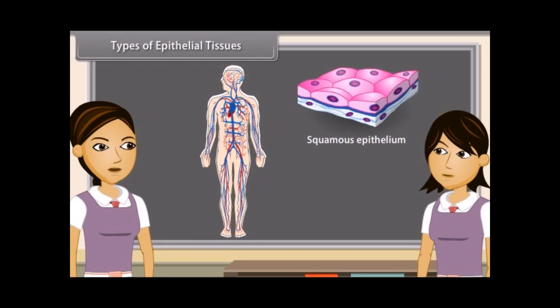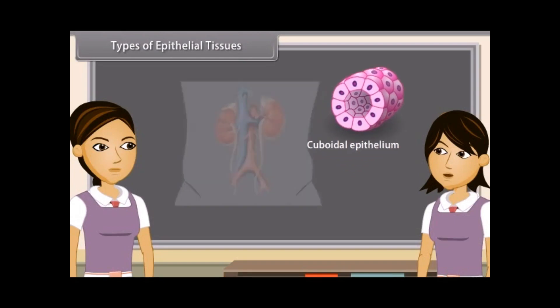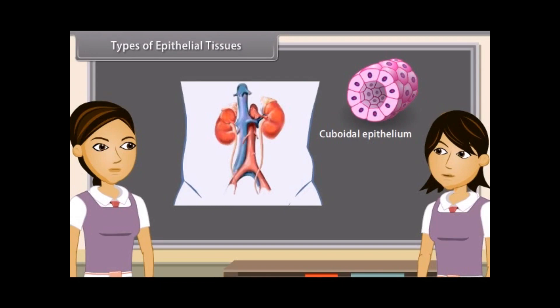In cuboidal epithelium, cells are cube-like. They appear square in section but appear hexagonal in free surface. It is found in kidney tubules, thyroid vesicles, salivary, sweat and exocrine glands.